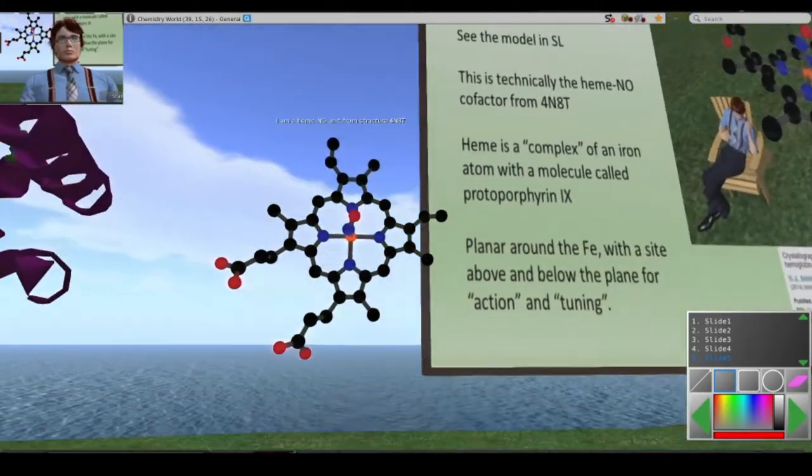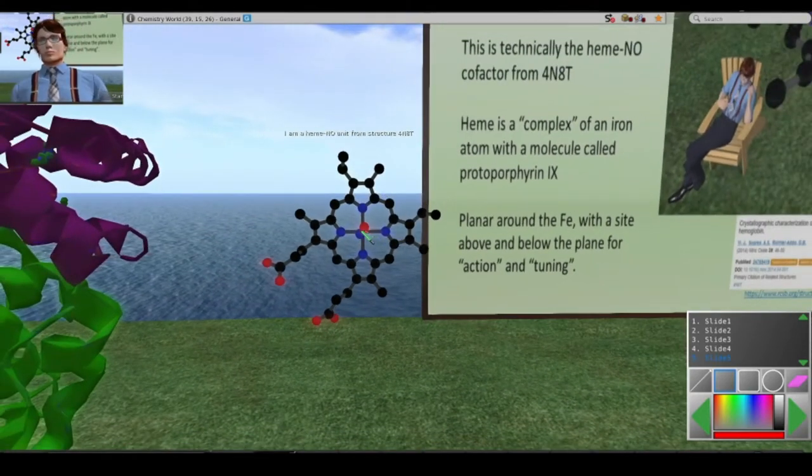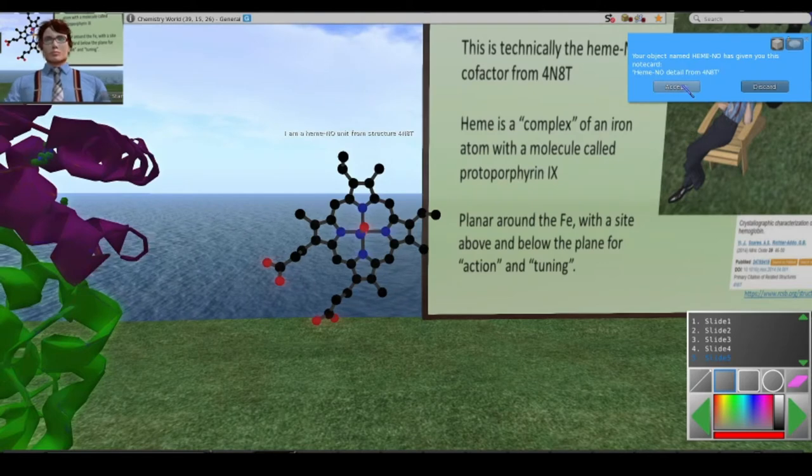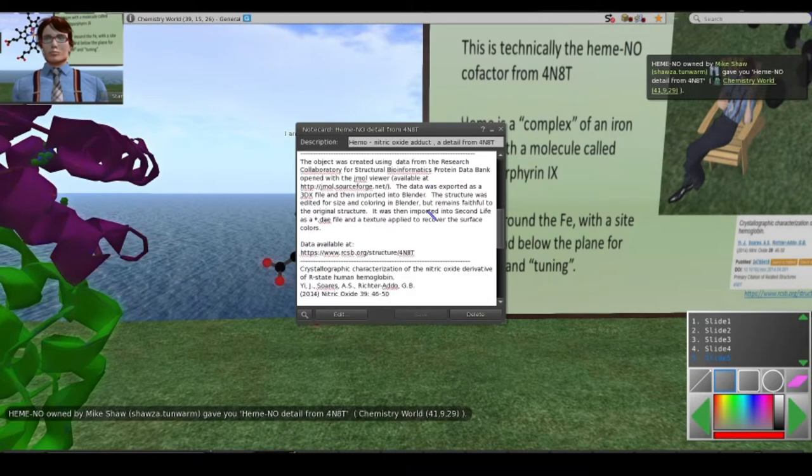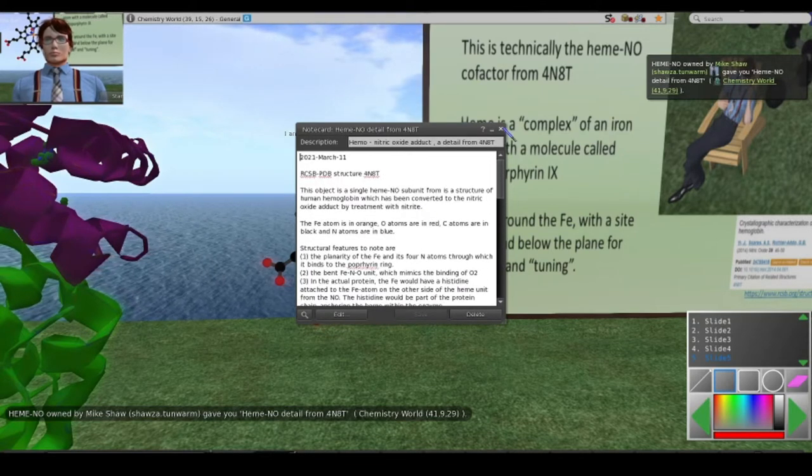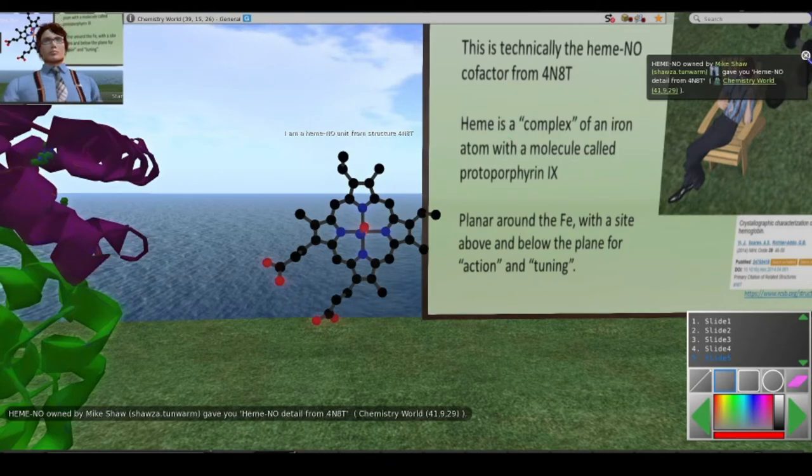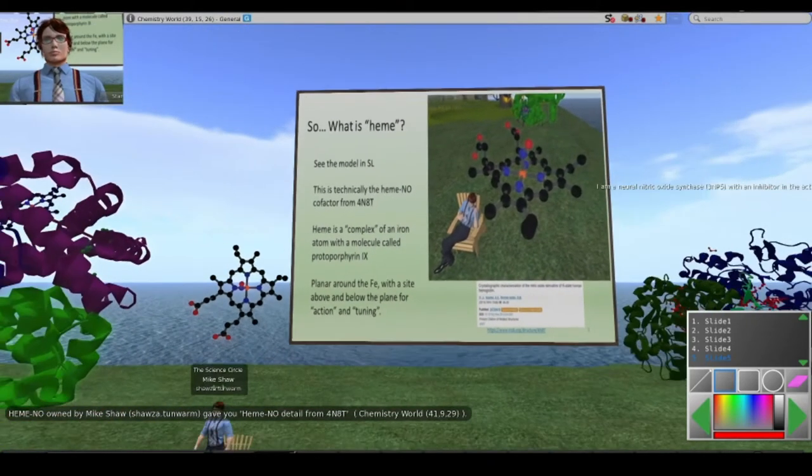The iron likes to have six things attached. I've only shown five. In the actual protein, there would be another group that is linked to the protein in this vacant sixth site. So that's a heme. And then specifically, it's a heme NO unit. My molecules that I've uploaded, if you click on them, you can get a note card from me that talks about where the structure came from and a few words about what the structure represents. I've done that for every single structure for this talk.